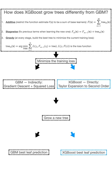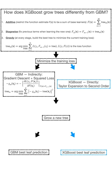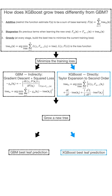GBM replaces training loss with respect to the model target, with squared loss with respect to the negative gradient of the loss in function space. In this way, any differentiable loss could be handled with a regression tree algorithm. XGBoost directly minimizes the training loss, with the actual loss approximated by its Taylor expansion to the second order in function space. After that, both algorithms grow a new tree to minimize their own objective.